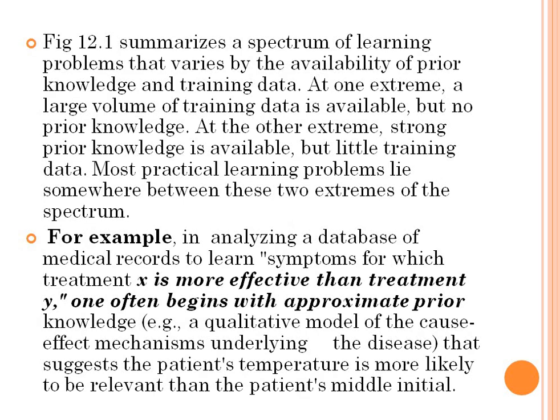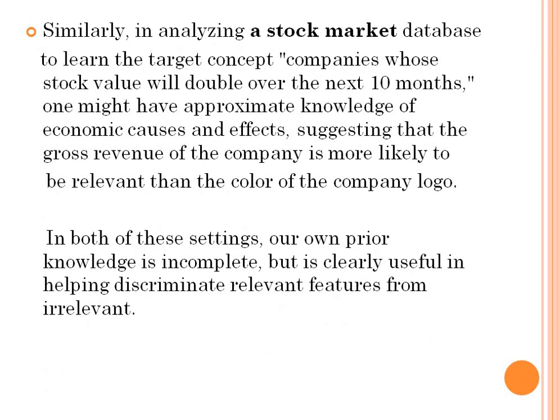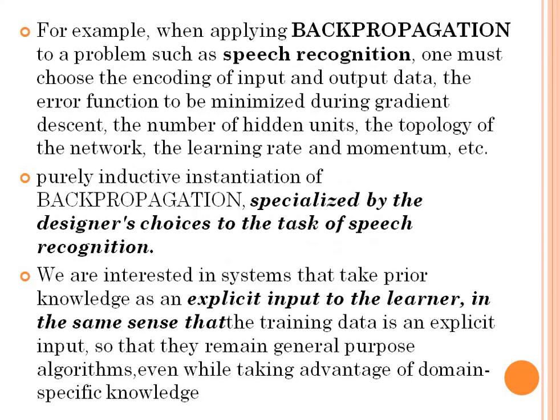Summarizing the spectrum of learning problems: if both extremes are unavailable, we go for a combination of the two. A simple example is analyzing a database of medical records — analyzing patient symptoms to decide what treatment is required. Another example is analyzing stock market companies to predict whose stock value will double over the next month, using previous approximate knowledge of economic causes and effects as domain theory. In both settings, our prior knowledge is incomplete but clearly useful in helping discriminate relevant features from irrelevant ones.